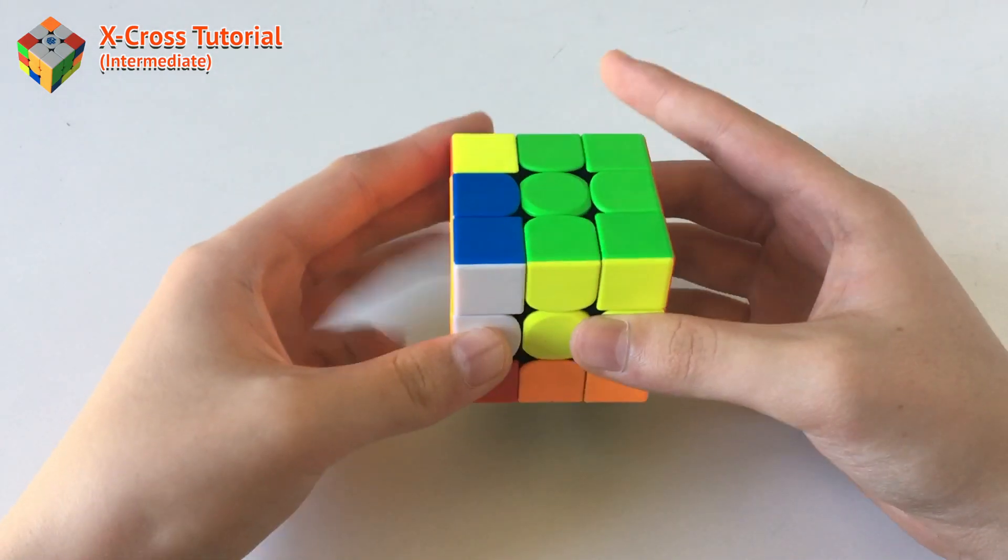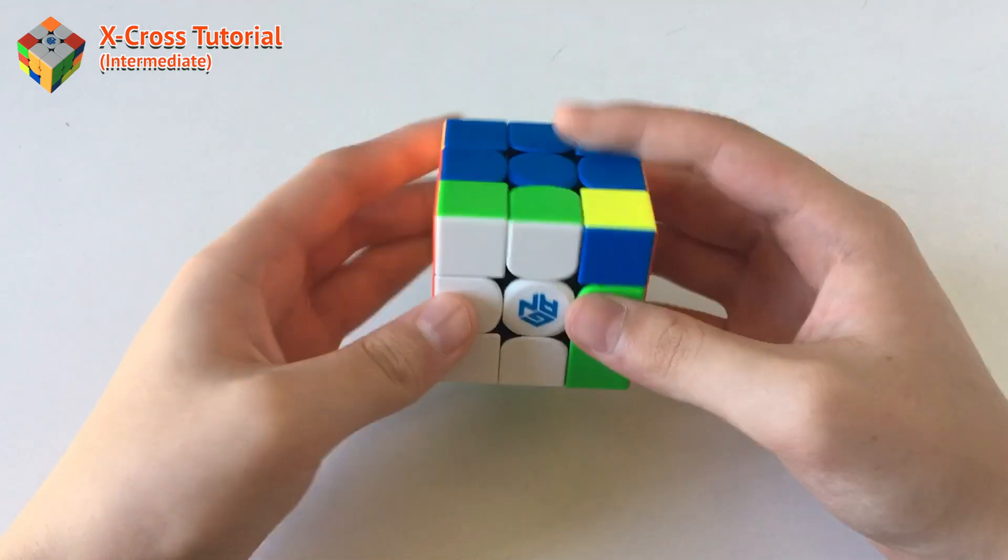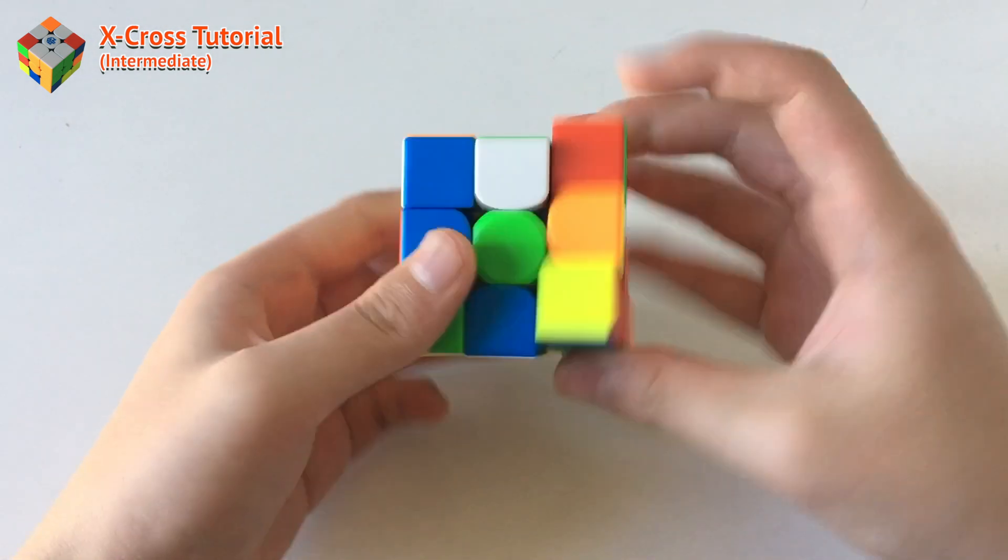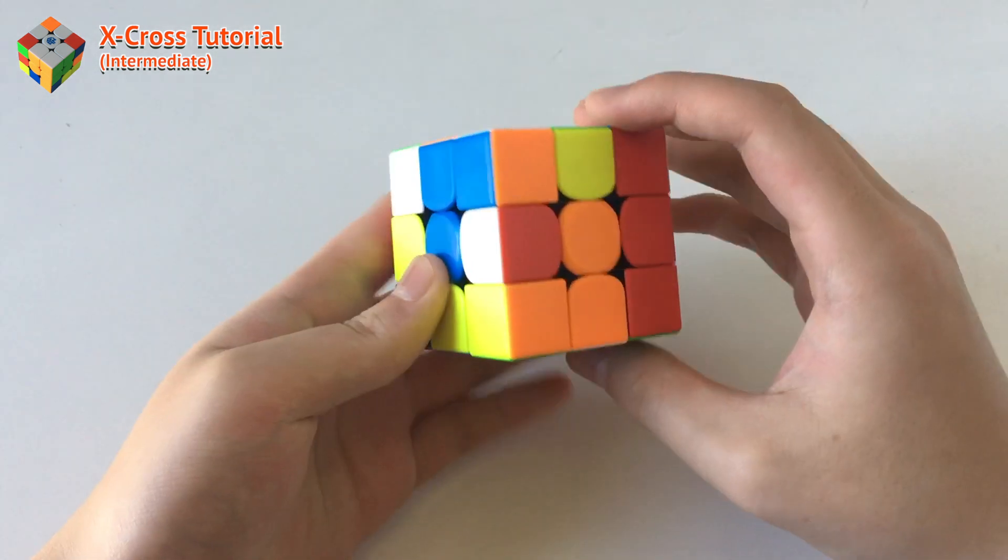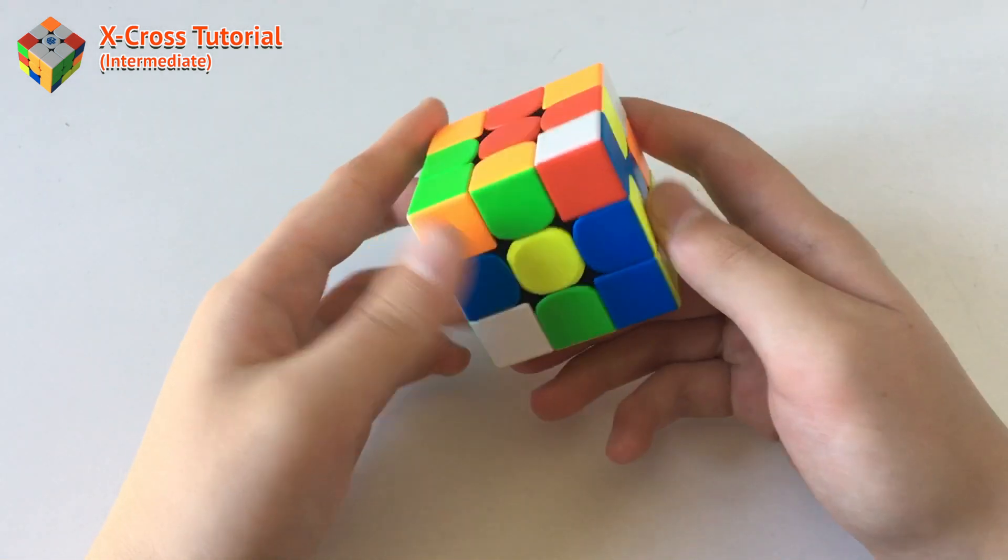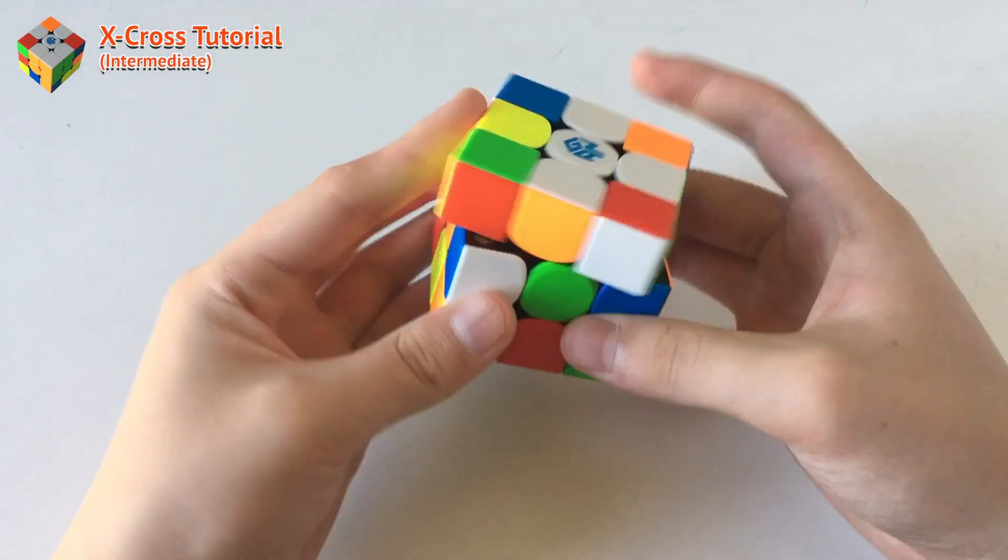An x-cross is basically a faster way of solving the cross and the first F2L pair. So first, let me scramble this cube up. As you can see, after we solve the cross, there might be some cases like this.